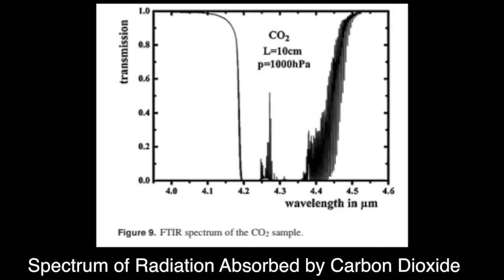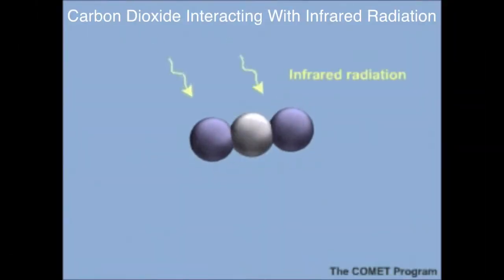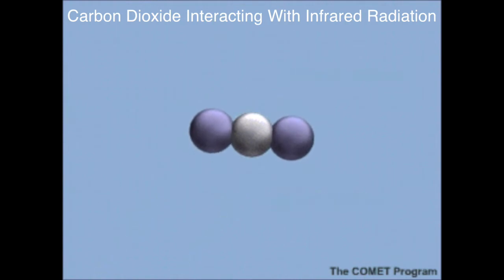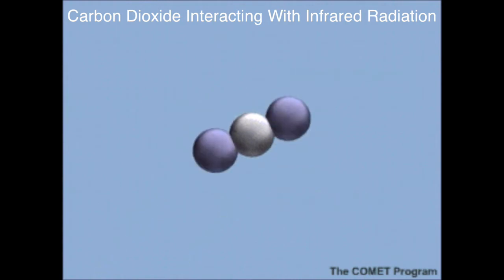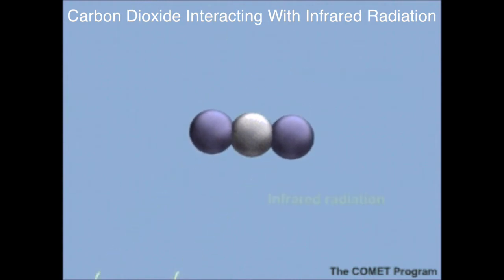Carbon dioxide, or CO2, is one of the gases found in our atmosphere that can absorb and therefore re-emit infrared radiation. This experiment is designed to demonstrate that phenomenon and provide a visual representation for how CO2 can affect the surface temperature of a planet.